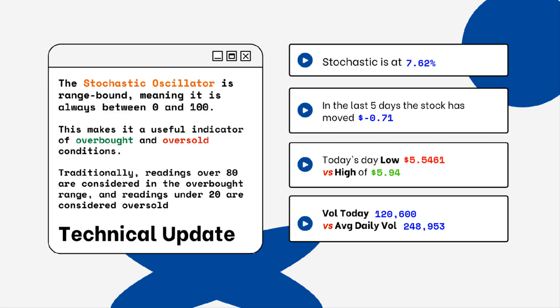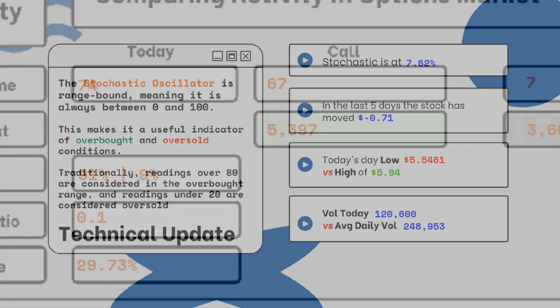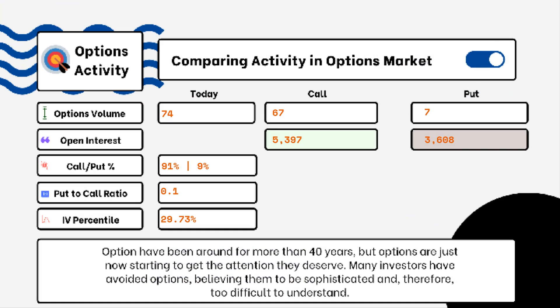We've also provided today's volume of shares traded and also the average daily volume. You want to see how much volume is being traded and if it is above or below the average daily volume level. This tells you how relevant the move is from the stock today.